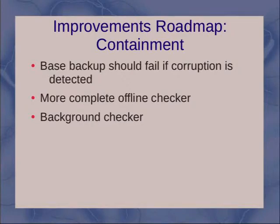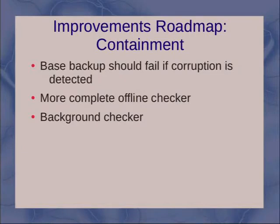And then I'd like a well-accepted method for a base backup to fail if corruption is encountered, either while it's happening or in a follow-up verification step. This is a big one — we'd like some way to say that you don't have a good backup. That could be done as part of pg_basebackup: maybe it uses a verification step after the fact and then fails if that verification step fails. That's critical so that you don't start removing your old backups or relying on that backup. I'd also like a more complete offline checker to validate backups, and a background checker that works online — something like vacuum or pg_dump but more principled, targeted really at just reading and checking checksums and otherwise discarding the data.